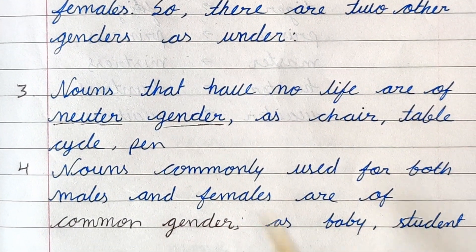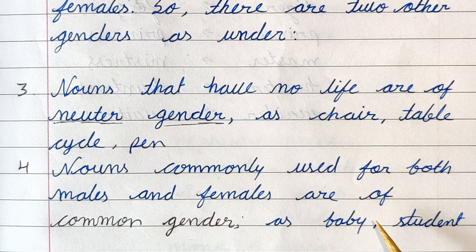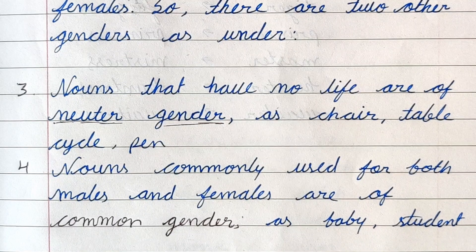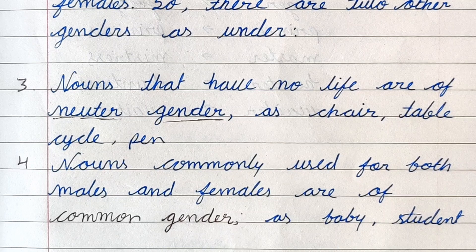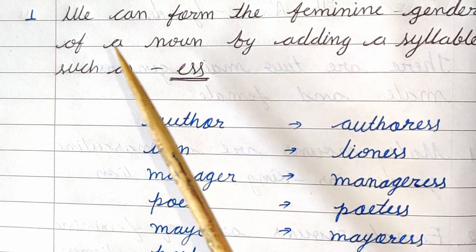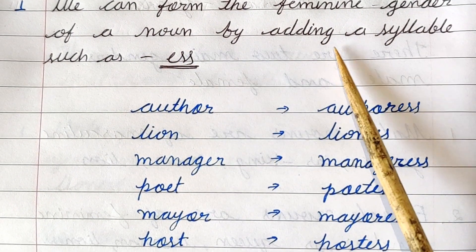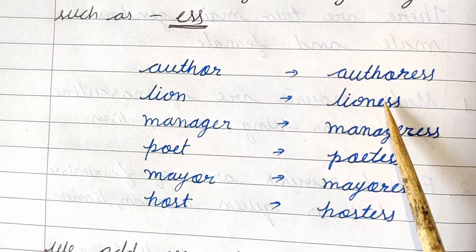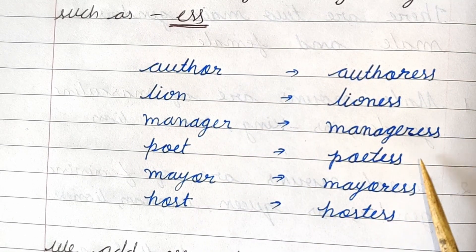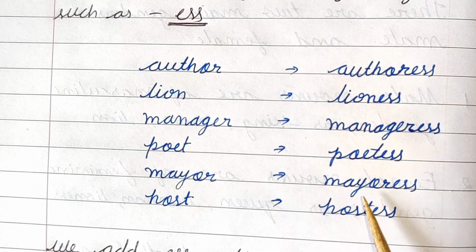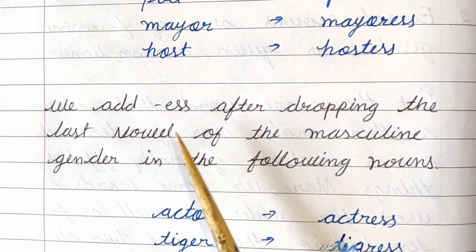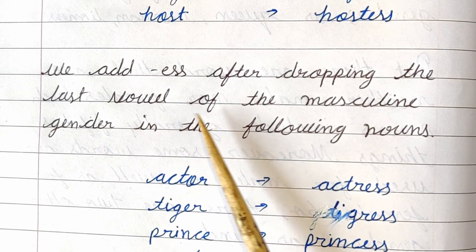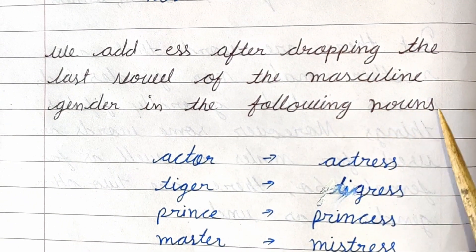Nouns commonly used for both males and females are of common gender. We can form the feminine gender of a noun by adding the syllable '-ess' — for example: author/authoress, lawyer/lawyeress, manager/manageress, poet/poetess, mayor/mayoress, host/hostess.